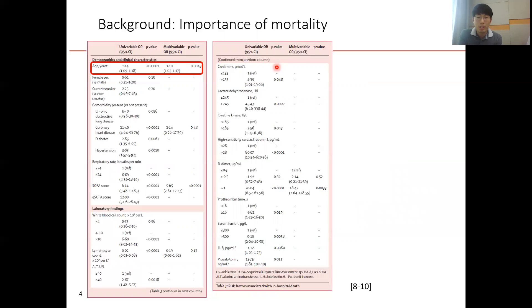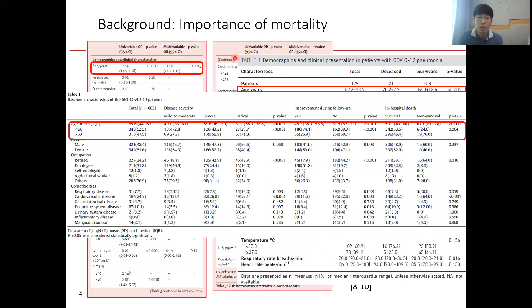The reason why mortality is important is that we can get information on the risk factors of COVID-19 mortality from this data, and we can also get clues to decrease the mortality. There are many articles which argue that age is the most important risk factor of COVID-19. We will try to explain whether age is the most important risk factor and whether there are any other risk factors.